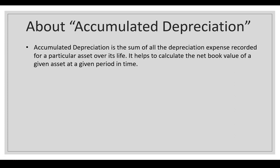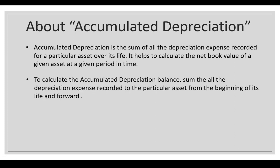We've used the example of a car a few times. Once the car has started to be driven or taken off of the lot, the accumulated depreciation balance will start to increase as each year's depreciation expense is recorded. To calculate the accumulated depreciation balance, all you have to do is sum the depreciation expense recorded to the particular asset from the beginning of its life and forward. So once we start driving that car, let's say we've been driving it for two years — we take two years of depreciation, adding the first year plus the second year, which gives us the accumulated depreciation balance as of year two.